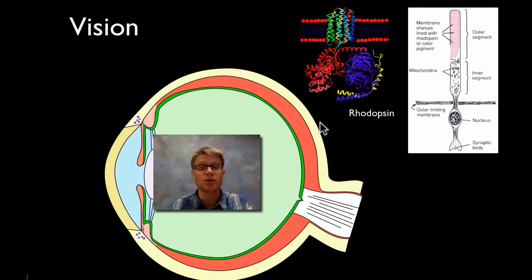Vision is super important in us. And so we have tons and tons of receptors, tons and tons of these neurons that are going to send information back to the brain because we're visual kind of people.